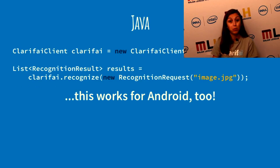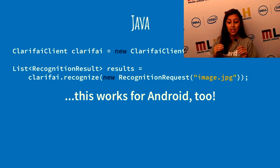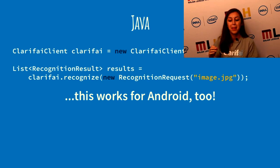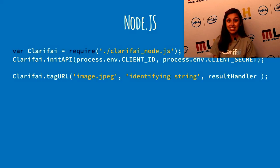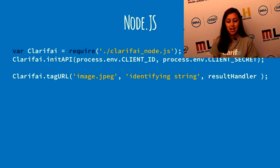There's a Java client as well, which also works for Android — it's just a matter of importing the packages and creating a Clarify client object, then getting the results by making a recognition request. And then there's also a Node.js client — honestly the only real dev language. You can just require the Clarify Node.js module, initialize the API, then tag the URL, and you'll get the result right away. It's super easy to use.